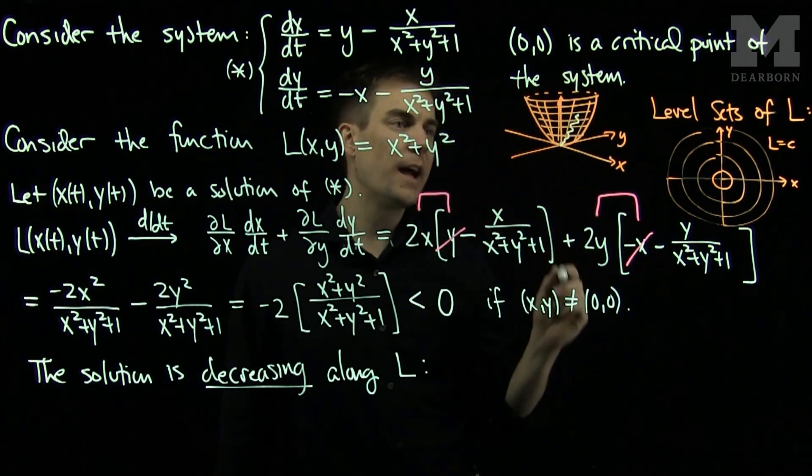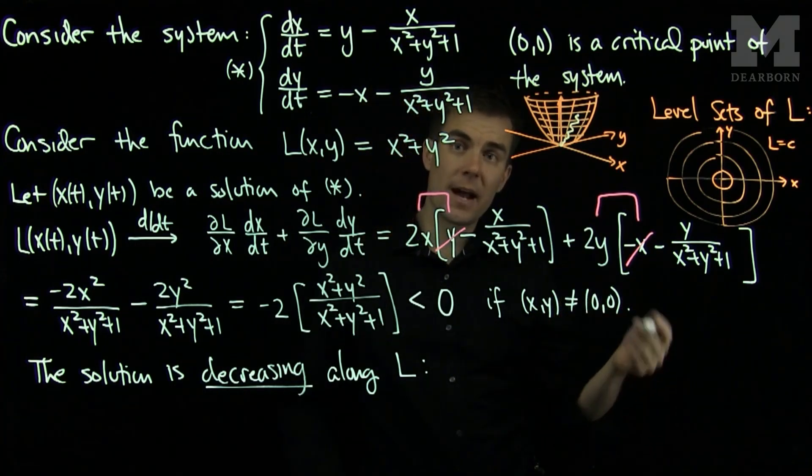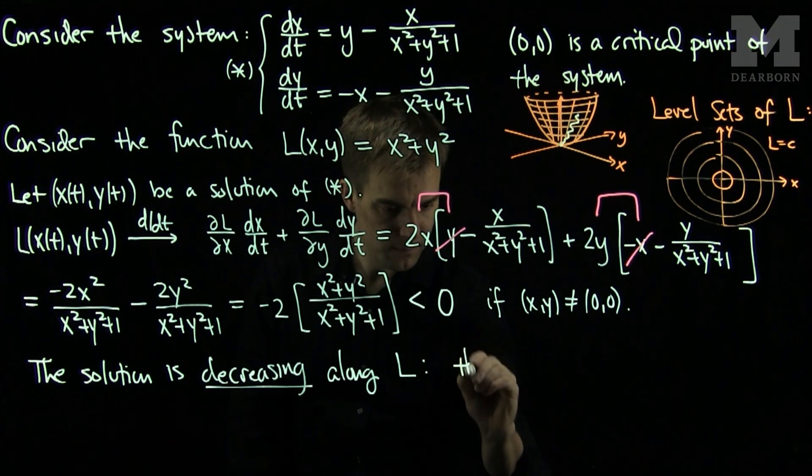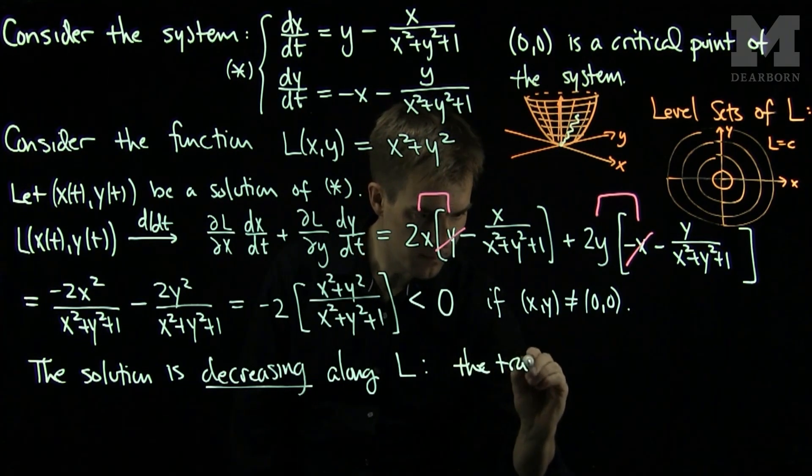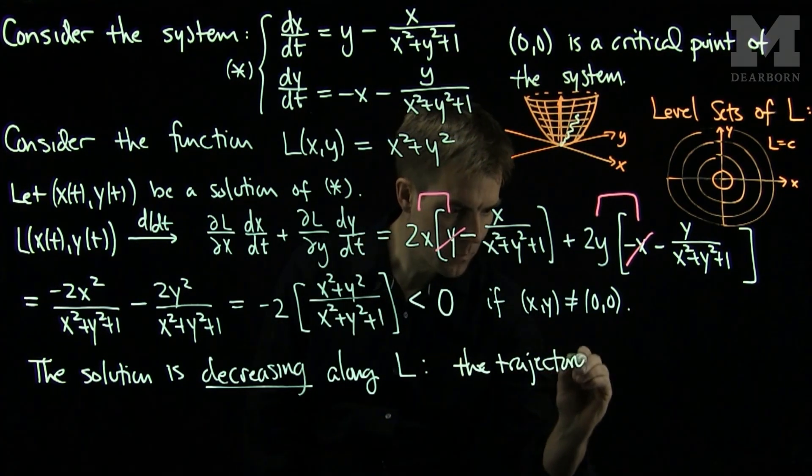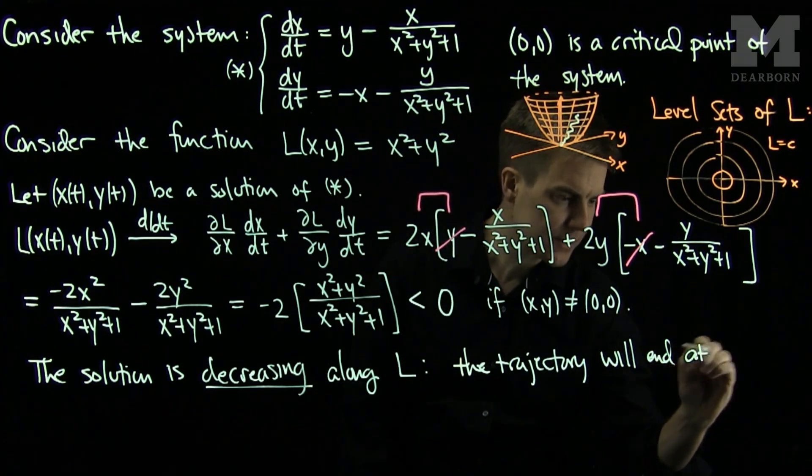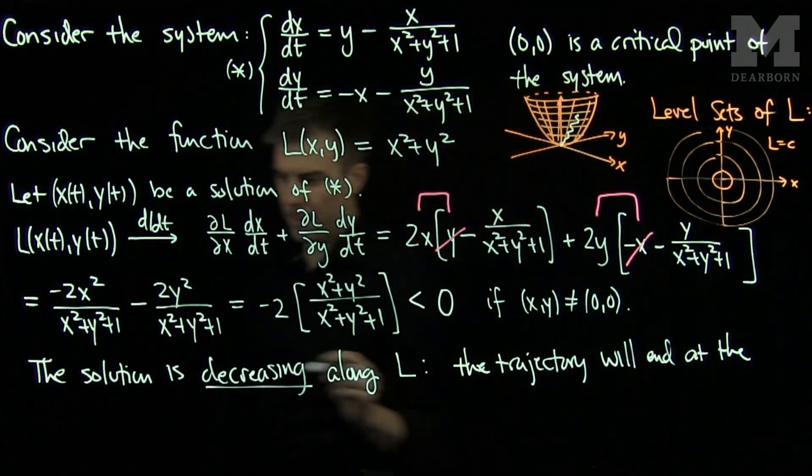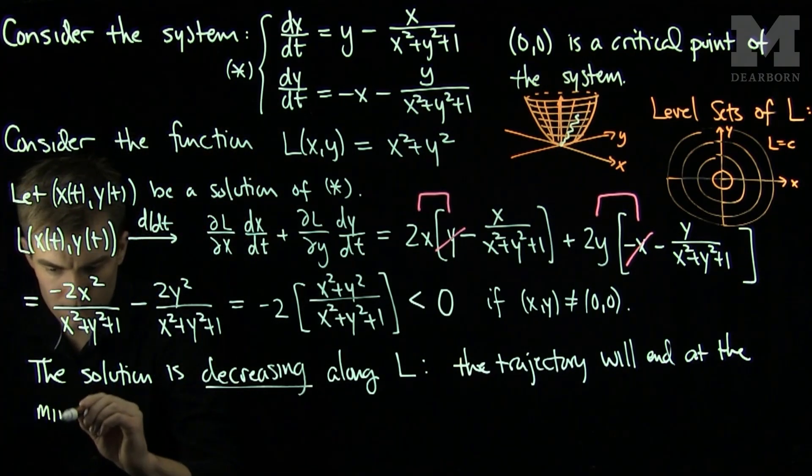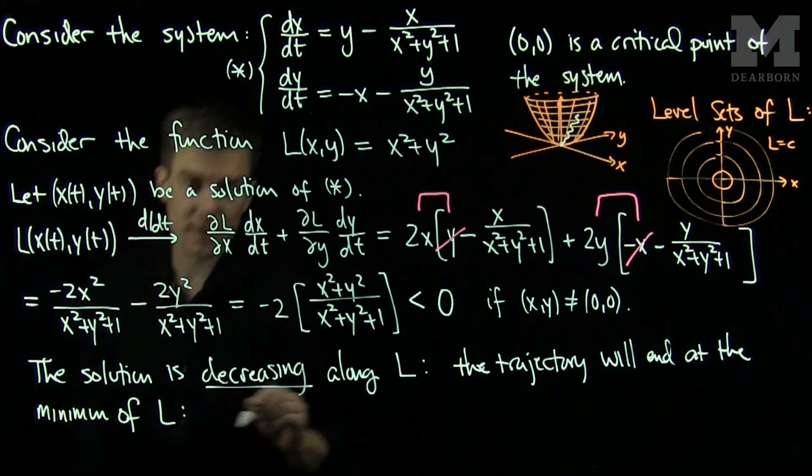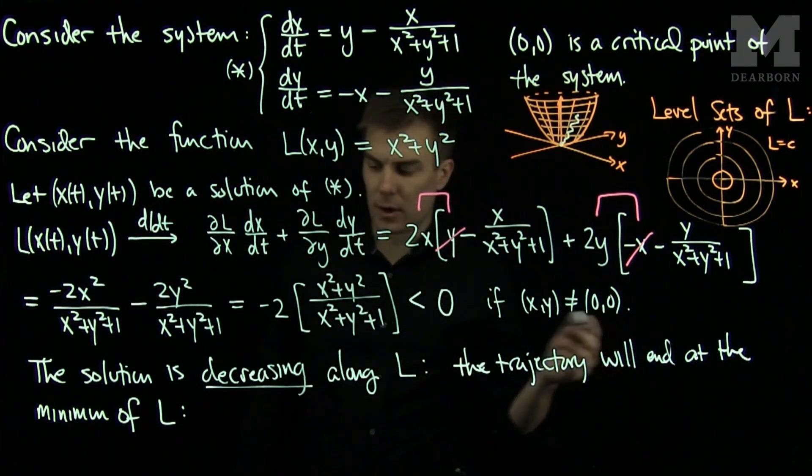Now if any trajectory on L is decreasing, that trajectory will eventually end up at the minimum point of L. So the trajectory will end at the minimum of L. The minimum of L is (0,0).